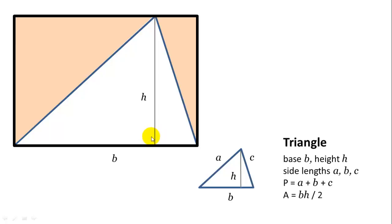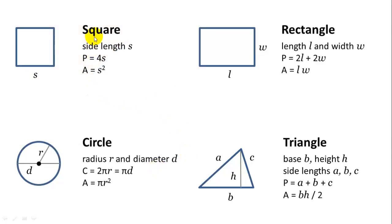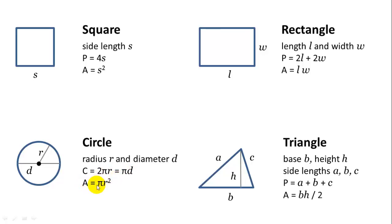The height of the triangle must be perpendicular to the base. To summarize everything: a square with side S has perimeter 4S and area S squared. A rectangle with length L and width W has perimeter 2L plus 2W and area L times W. A triangle with base B, height H, and sides A, B, C has perimeter A plus B plus C and area base times height divided by 2. A circle with radius R and diameter D has circumference 2πR or πD, and the area — which we didn't derive — is πR squared. Let's memorize that formula: πR squared.